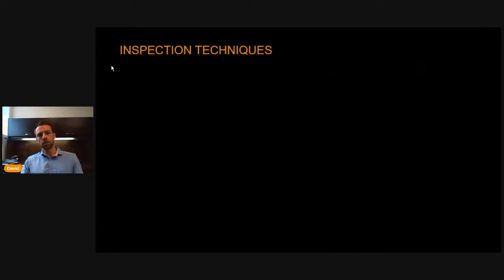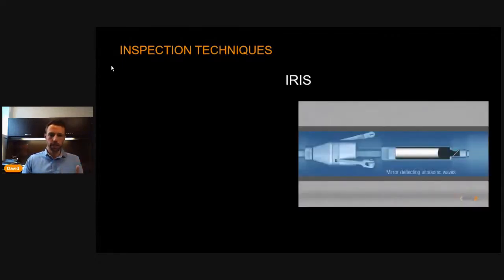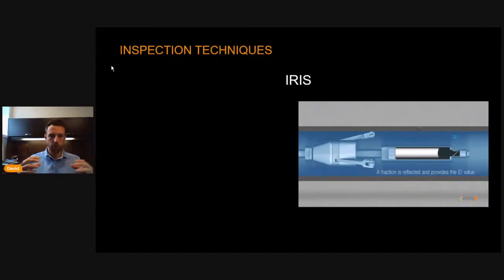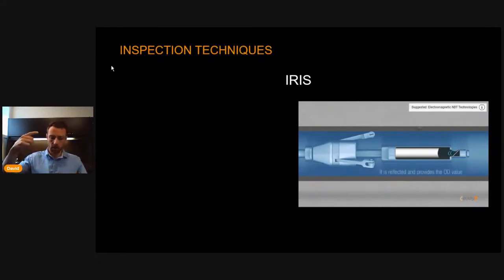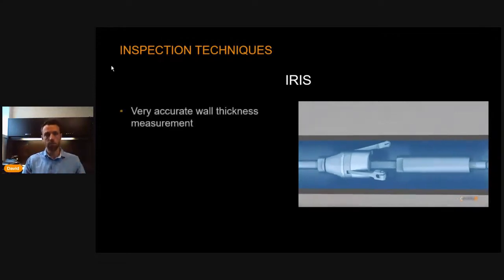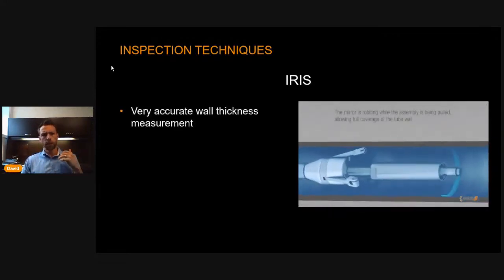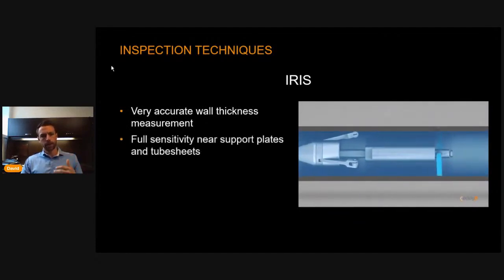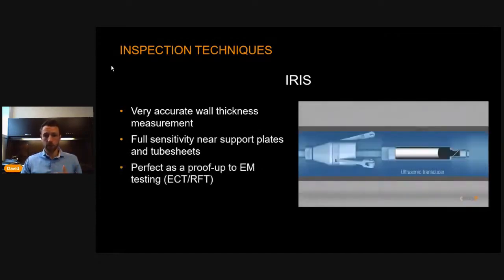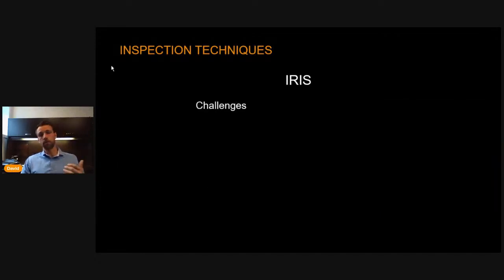To inspect those tubes, one of the inspection techniques often used is IRIS — using ultrasonic technology. There's a turbine spinning in the middle, so the UT signal bounces on the mirror and we get a complete C-scan imaging of the inside of the tube. IRIS offers very accurate wall thickness measurement, full sensitivity near support plates and tube sheets, and it's a perfect proof-up for electromagnetic testing like ECT and RFT. However, IRIS offers a few challenges that are even bigger when it comes to air cooler inspection.